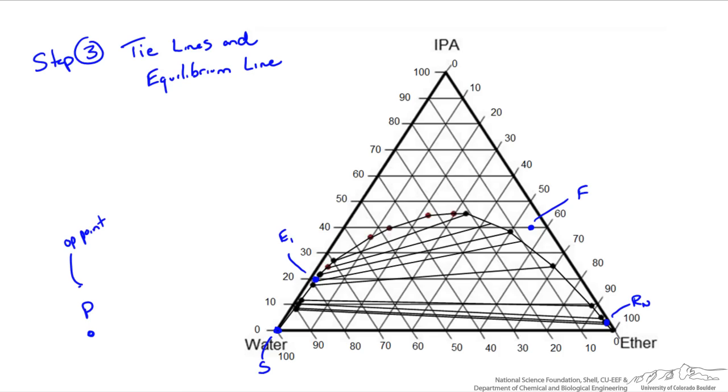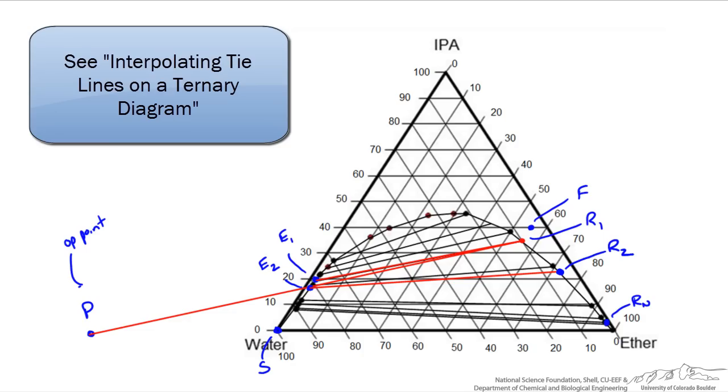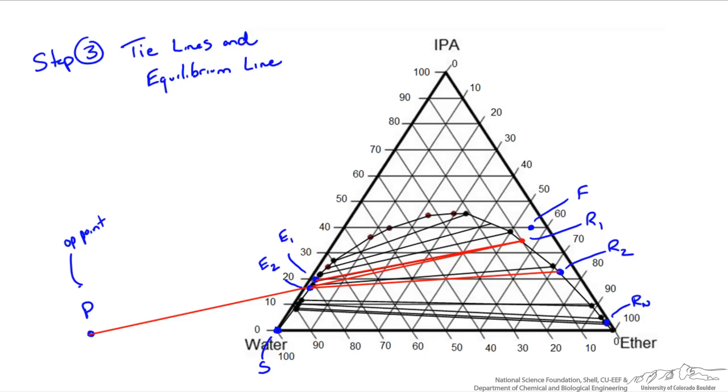So the first thing we do from stage 1 at E1 is to follow the tie line, since we know at stage 1 we reach equilibrium. So we follow that tie line to the other side and draw a point on the equilibrium curve for our raffinate, labeled R1. We know that R1 and E2 are passing streams that fall on a line with P, so we draw a line from P to R1, and where it intersects our equilibrium curve is where E2 is. Then we repeat the process, following the tie line from E2 to the other side where R2 is.